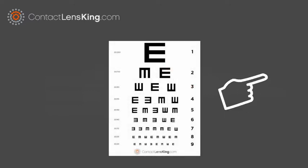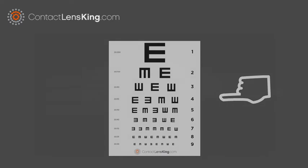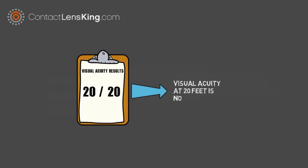The results of visual acuity tests are expressed as a fraction, such as 20/20. If a person has 20/20 vision, it means their visual acuity at 20 feet is normal.